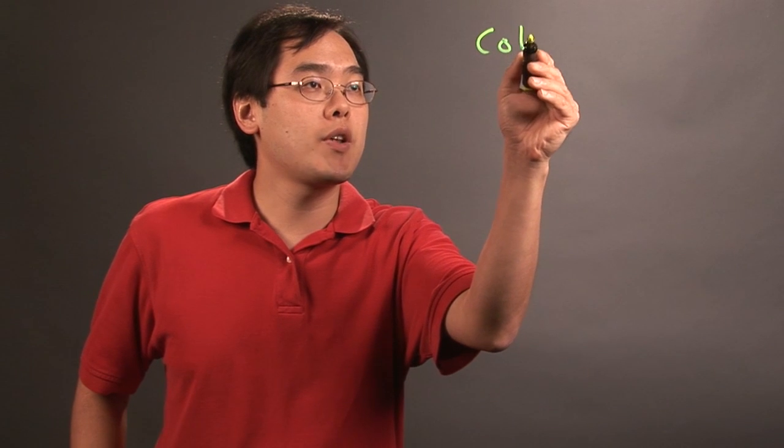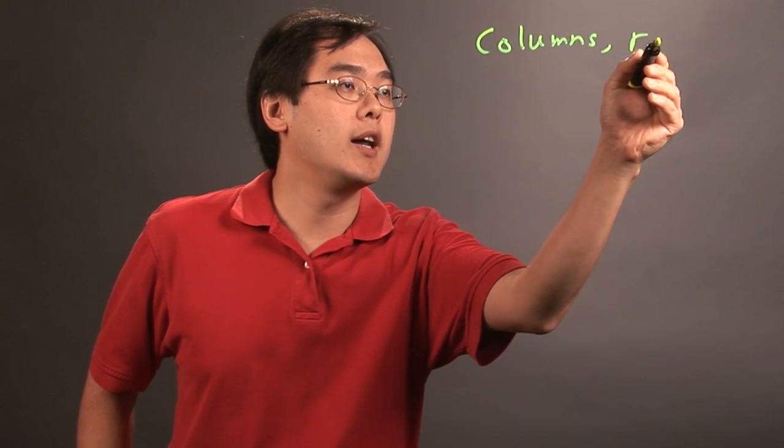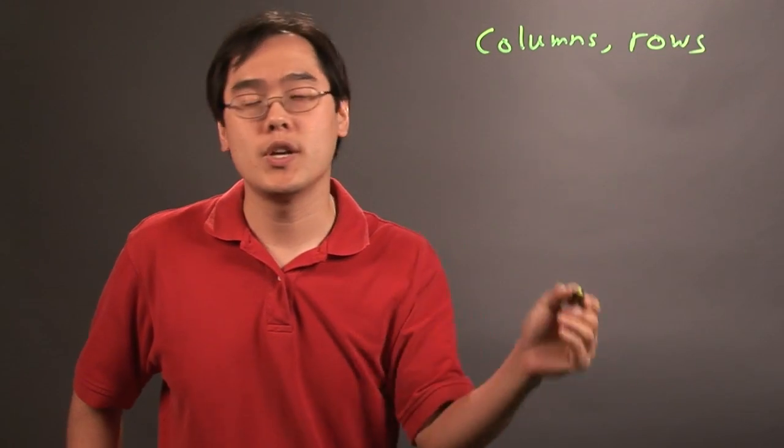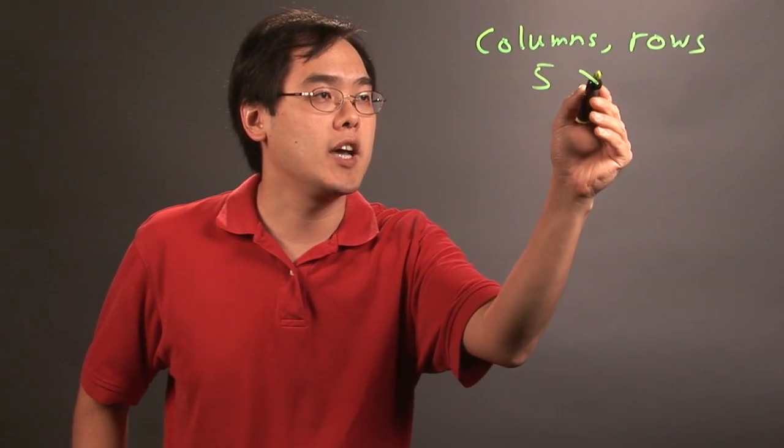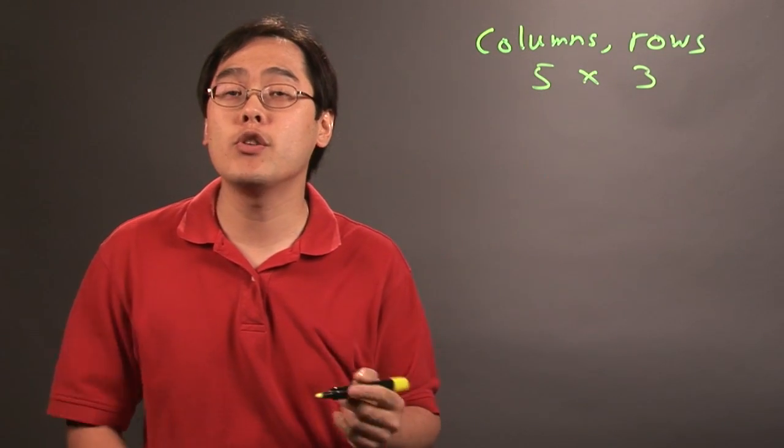What you want to think about is the first number is going to involve columns and the second number is going to involve rows. So if you have, for example, five times three, understand that it's five columns and three rows, and you're using pictures.